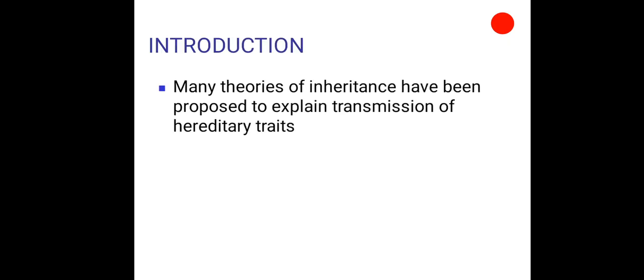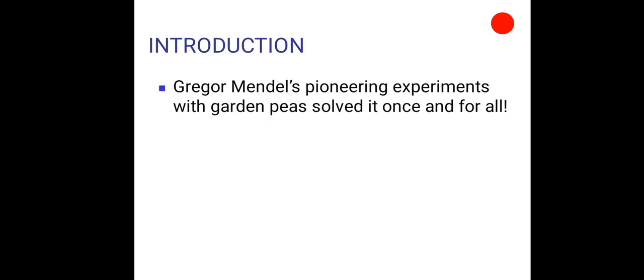Many theories of inheritance have been proposed to explain transmission of hereditary traits. For example, blending theory of inheritance. But Gregor John Mendel's pioneering experiments with garden peas solved it once and for all.